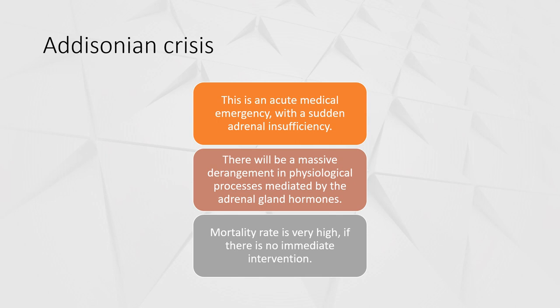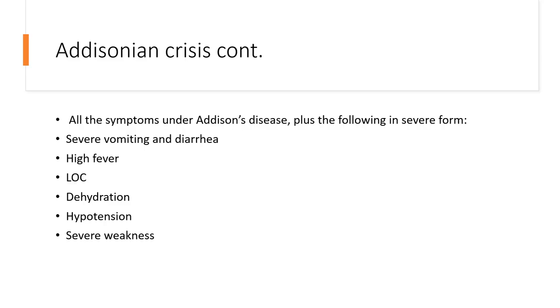There is an entity known as Addisonian Crisis. It is an acute medical emergency with sudden adrenal insufficiency. There will be a massive derangement in physiological processes governed by the adrenal hormones. Mortality is very high in Addisonian Crisis if there is no immediate intervention. All the symptoms covered previously will appear here again, but in severe form.